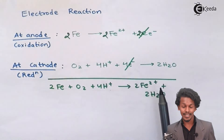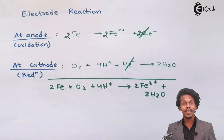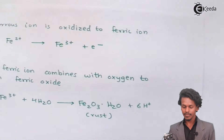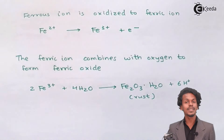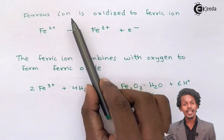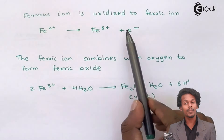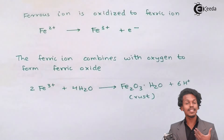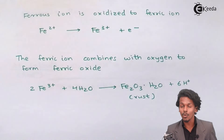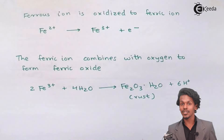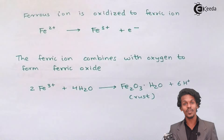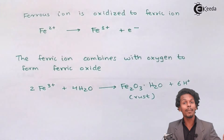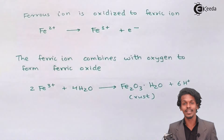Fe²⁺ is known as ferrous iron. The ferrous iron is oxidized to form ferric iron, Fe³⁺, liberating one electron. These Fe²⁺ ions get oxidized, and the electron moves toward the cathode region to drive further reduction and form more H₂O. That H₂O is again helpful in the corrosion of the iron. This process increases and goes on rapidly until the whole block of iron gets corroded.